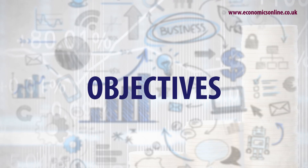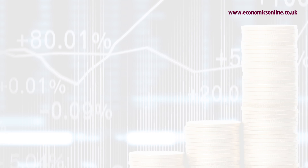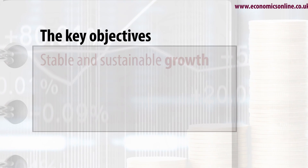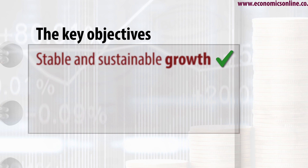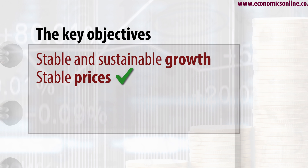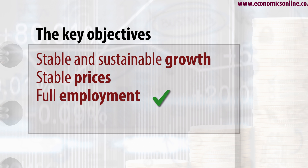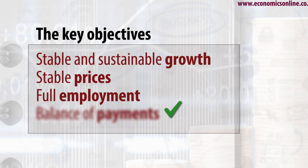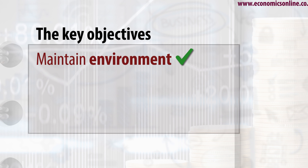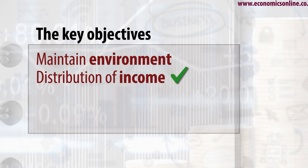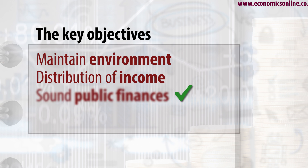There are at least seven macroeconomic objectives: to achieve stable and sustainable growth; to have a stable price level, with no significant inflation and no deflation; to have as near to full employment as possible; to have a balance of payments with the rest of the world; to maintain the environment for the benefit of future generations; to have an equitable distribution of income; and to ensure that public sector finances are sound.